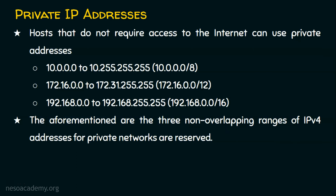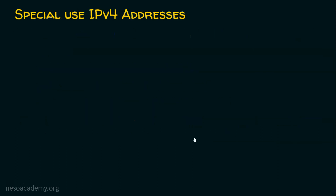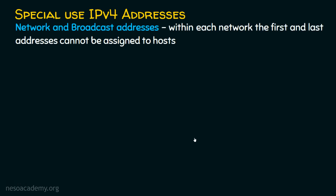Let's now see the special use IPv4 addresses. The first special use addresses are the network and broadcast addresses. In every network, the first address and the last address are not used and cannot be assigned to a host — we have already seen this in classful addressing. The first address is the network address and the last address is the broadcast address. In a network with N IP addresses, we always subtract two because of this.